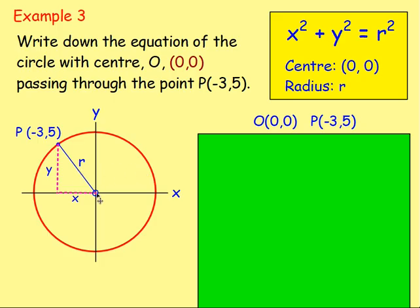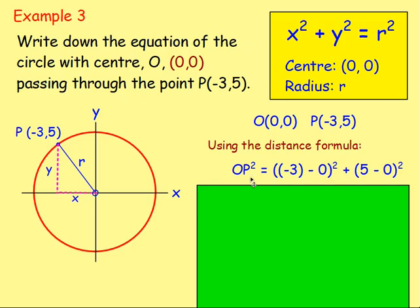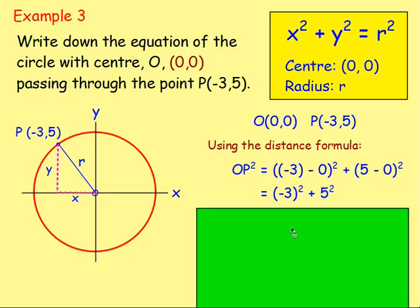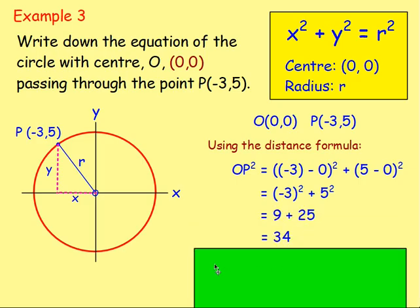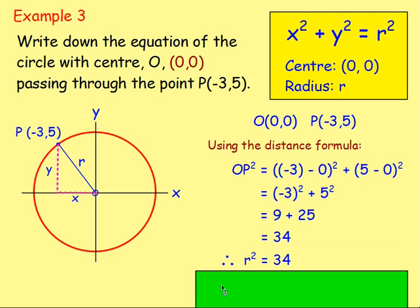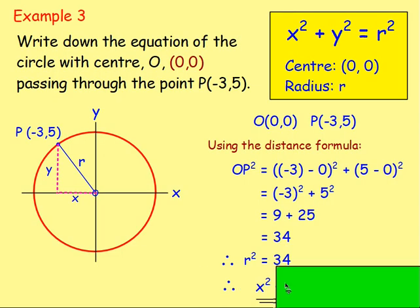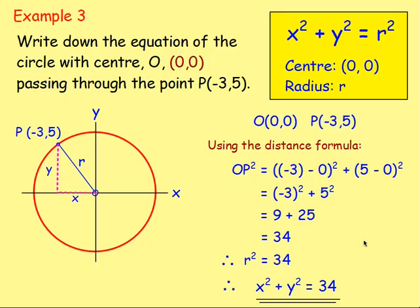What other people like to do is use the distance formula. You've got the two points (0,0) and (-3, 5), so you can say r-squared, or OP-squared, equals (-3 minus 0) all-squared plus (5 minus 0) all-squared. Either way you get negative 3-squared plus 5-squared, which gives 34. So r-squared equals 34. Make sure you don't go on and work out r — you've already worked out r-squared, and that's what you need. The equation is x-squared plus y-squared equals 34. Don't square root it and then square it again — you just want r-squared.